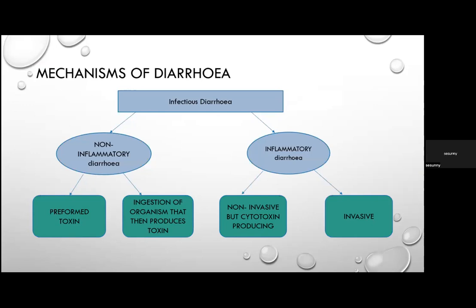Briefly on the mechanisms of diarrhoea, to contextualize the two main ways infectious diarrhoea manifests: non-inflammatory diarrhoea occurs either through ingestion of a preformed toxin or through ingestion of an organism that produces a toxin in the gastrointestinal lumen. Inflammatory diarrhoea involves non-invasive but cytotoxin-producing microorganisms, or invasion by microorganisms.